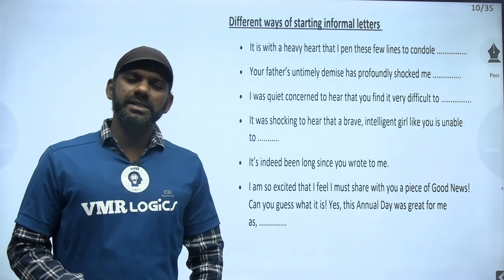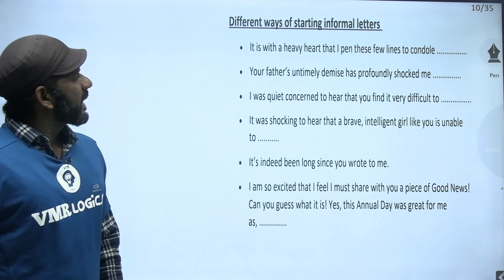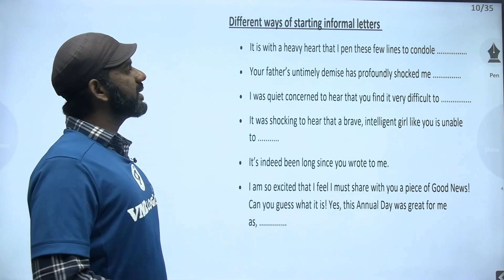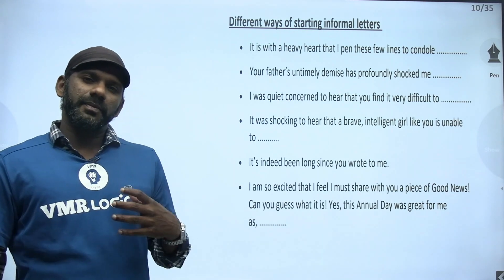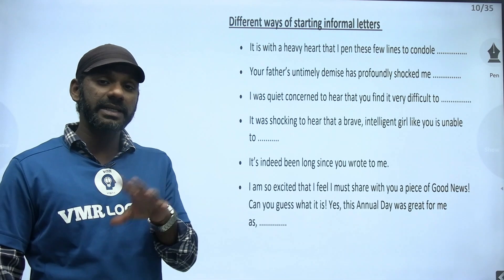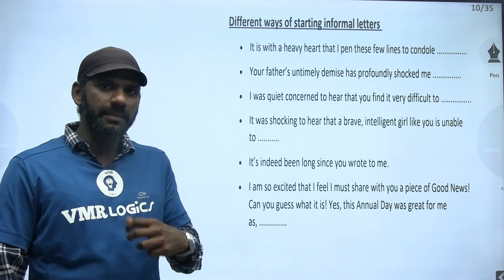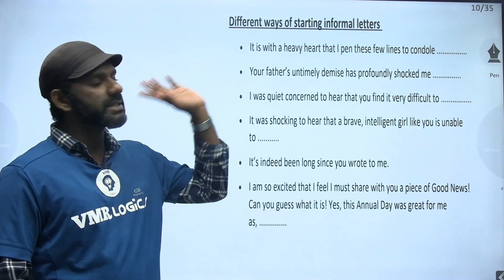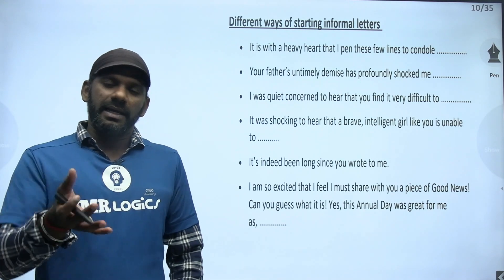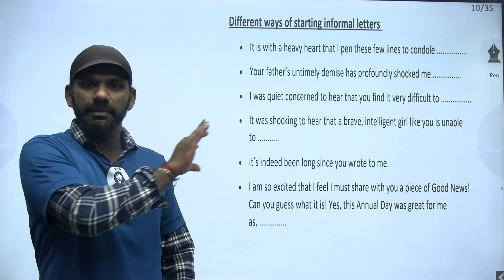Now we've discussed different ways of starting formal letters; let's go for different ways of starting informal letters. There are no specific rules, but here are some options. If you are writing a letter to console a person — someone who has suffered a loss and you want to provide some relief — you can start: 'It is with a heavy heart that I pen these few lines to condole.' Losses happen to everyone and you wish your letter could provide some kind of relief.